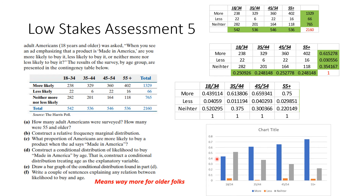Here's the young people. Notice that the blue, which says you're more likely, increases as you get older. And the gray, which means you really don't care, is also decreasing. So there's a couple of trends there, and things like so many things mean way more for older folks.